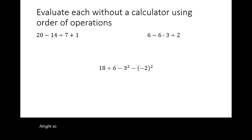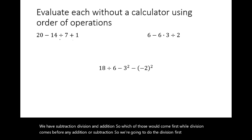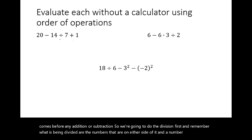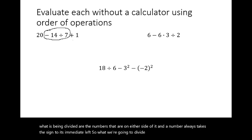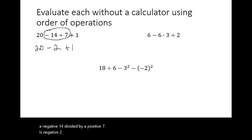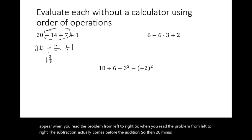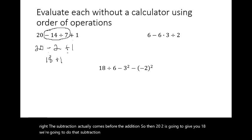For the expression twenty minus fourteen divided by seven plus one: division comes before addition or subtraction, so we do negative fourteen divided by seven first, which is negative two, leaving the twenty and plus one alone. Then, reading from left to right, subtraction comes before addition: twenty minus two is eighteen. Then eighteen plus one is nineteen.